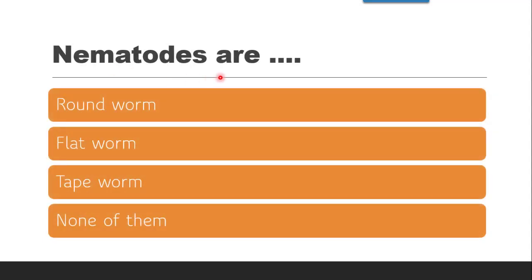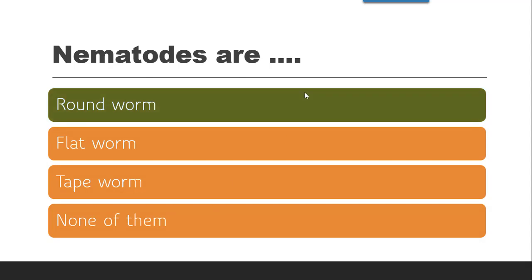Next question: Nematodes are — whether they are roundworms, flatworms, or tapeworms. Nematode is a phylum, and the nematode phylum includes roundworms. Whether roundworm, flatworm, tapeworm, or none of them — the correct answer is roundworm.